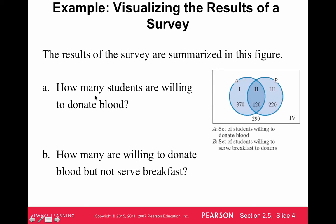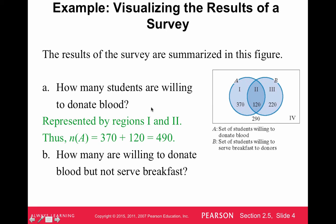Let's answer the questions. How many students are willing to donate blood? The willing-to-donate-blood group is not just the 370, but the 370 plus the 120. The 370 are willing to donate blood but not serve breakfast, and the 120 are willing to donate blood and serve breakfast. So the total is 490 students willing to donate blood.